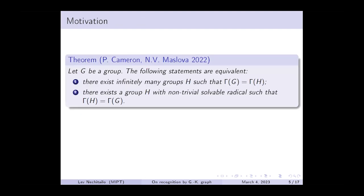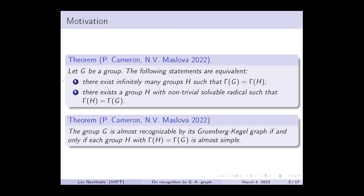Recently, Natalia Maslova and Peter Cameron proved the following theorem: a group G is unrecognizable by the Gruenberg-Kegel graph if and only if there exists a group H with the same Gruenberg-Kegel graph and non-trivial solvable radical. Moreover, the group G is almost recognizable by the Gruenberg-Kegel graph if and only if each group H with the same Gruenberg-Kegel graph is almost simple.